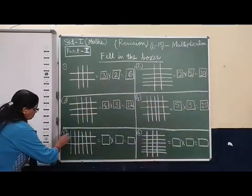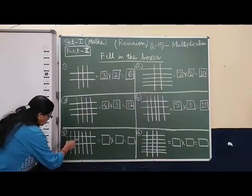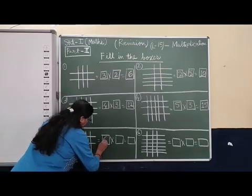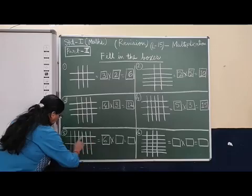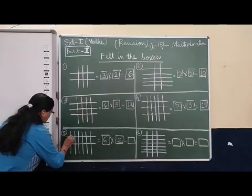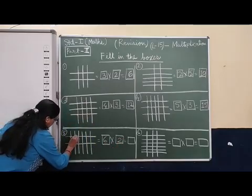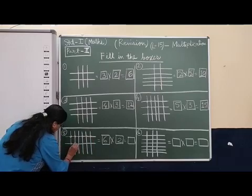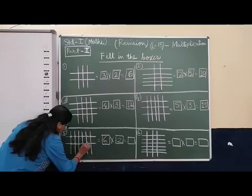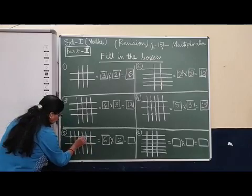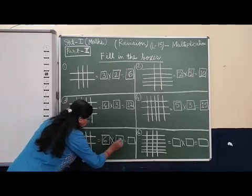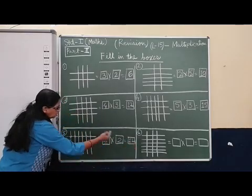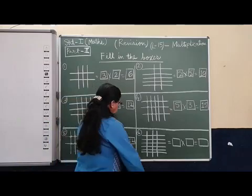Take the next one. Which table? Count standing lines — one, two, three, four, five, six. Table of six. How many sleeping lines? One, two. Now put dots and count — one, two, three, four, five, six, seven, eight, nine, ten, eleven, twelve. That means the answer is twelve. So two sixes are twelve, or six twos are twelve.